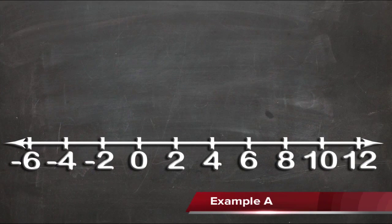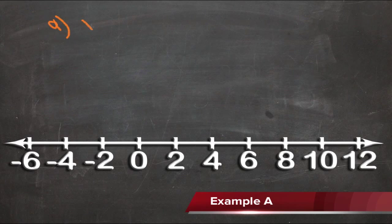The trick to graphing inequalities on a number line is to recognize that what you're graphing is what the variable can be. So if, as in example A here, it says that we're graphing x is less than negative 3...